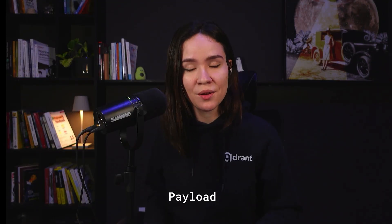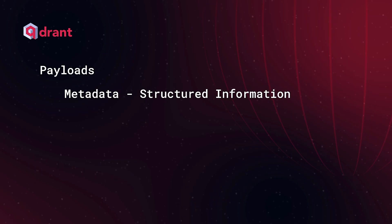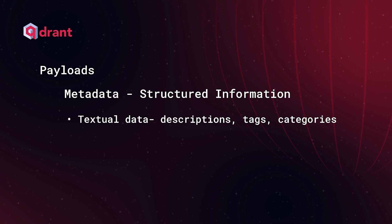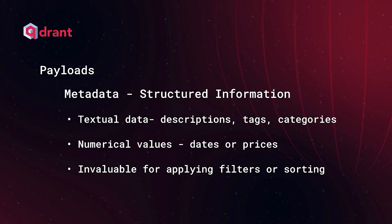We talked a lot about vectors, but there's still a very important part of our point we haven't mentioned — the payloads. We worked a little bit with payloads in day zero, but now things get more interesting. We're going to understand what types of payloads can be uploaded to a point and how we can retrieve points depending on the payloads we have. Sometimes you need more than just numbers to fully capture the essence of your data. Payloads hold metadata — basically structured information about that point. It could be textual data like descriptions, tags, or categories, or numerical values like dates or prices.